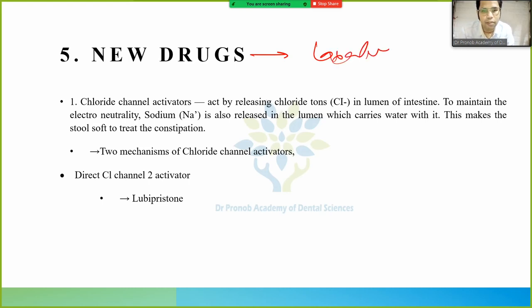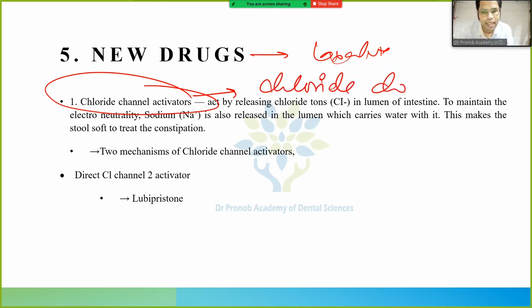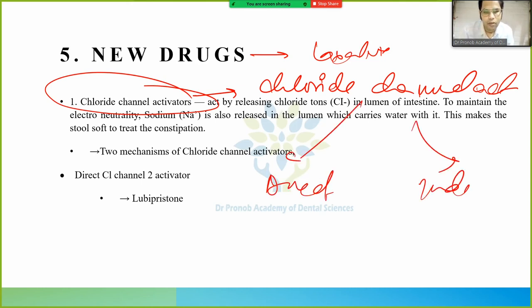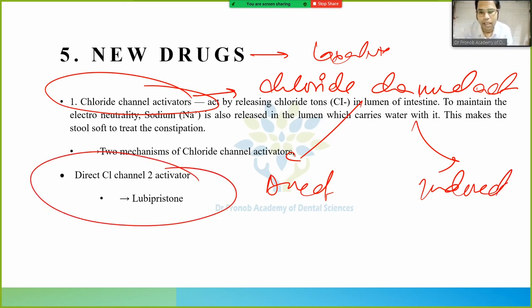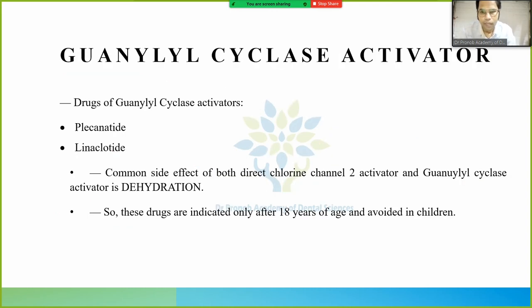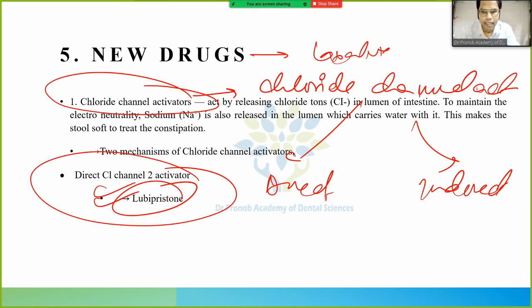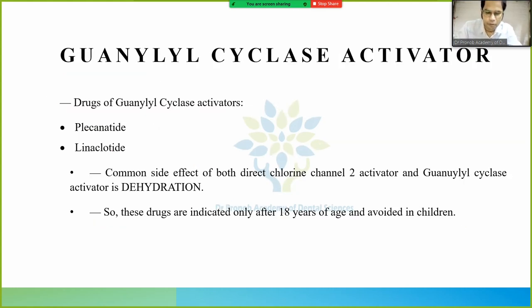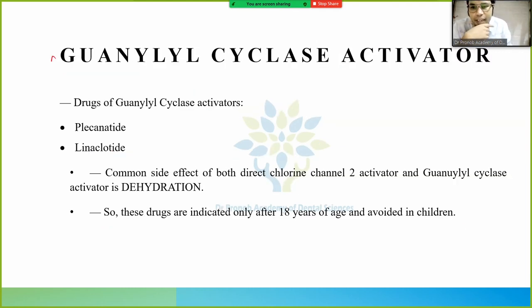Newer laxatives include chloride channel activators — of two types: direct and guanylate cyclase activators. The direct chloride channel-2 activator is lubiprostone. The guanylate cyclase activator drugs include linaclotide.